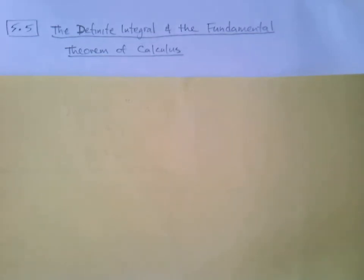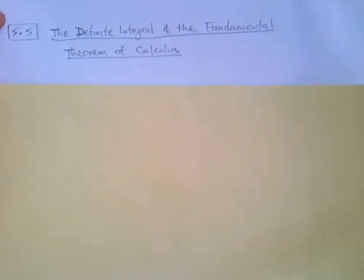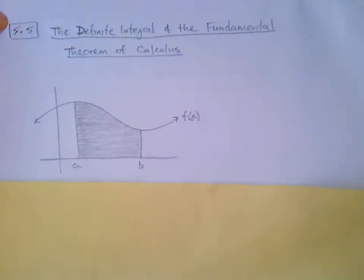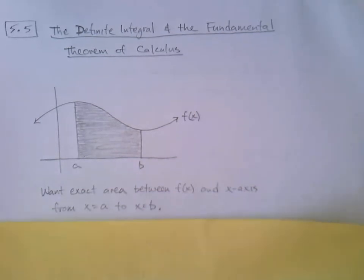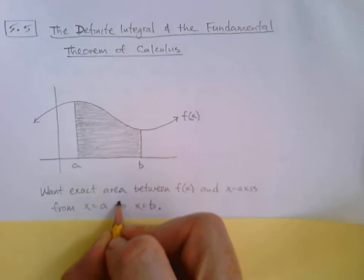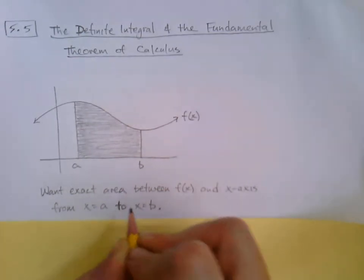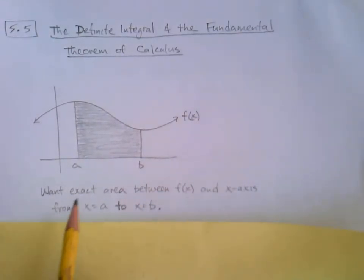How's this going to begin? Well, if you recall, it was all about this question: given some function f(x), we want a quick way to find the exact area between f(x) and the x-axis from x equals a to x equals b. In 5.4 we learned a way to get an approximation.